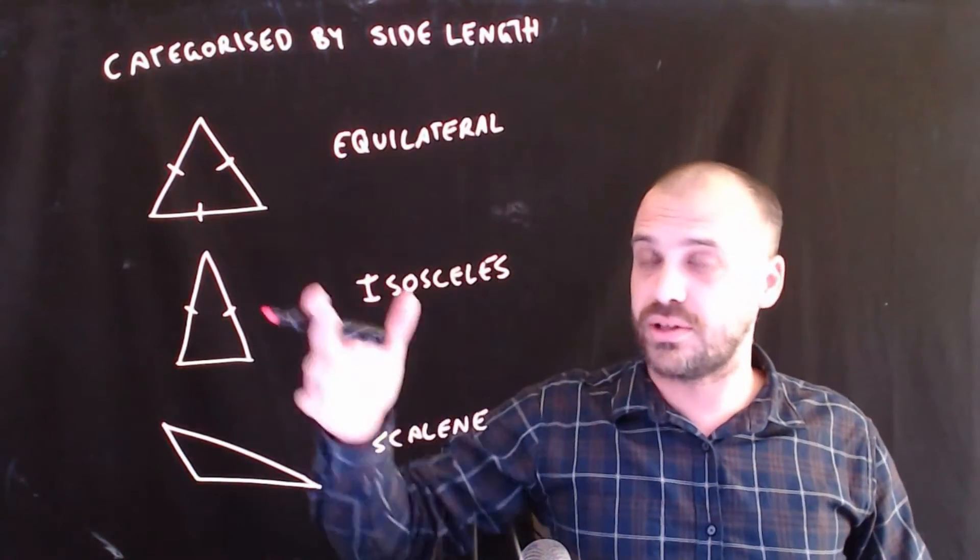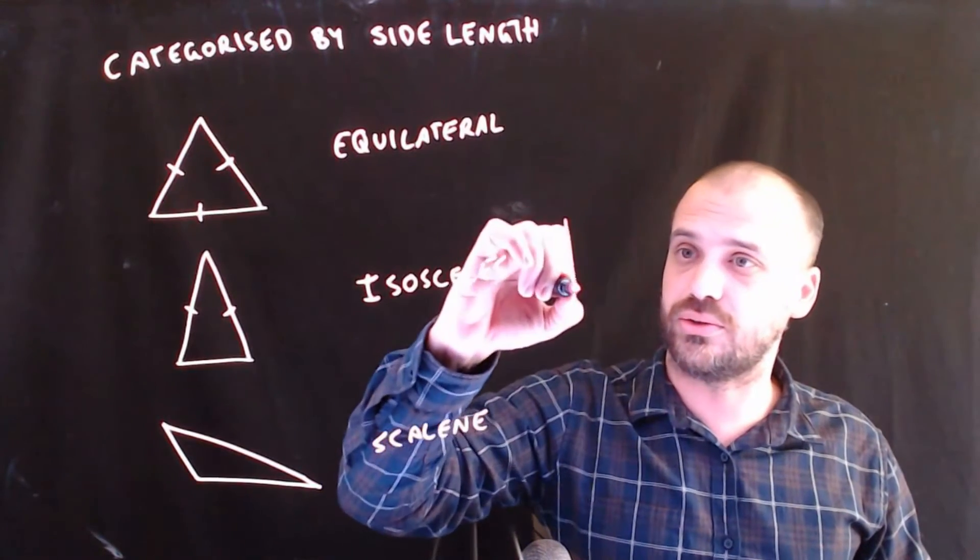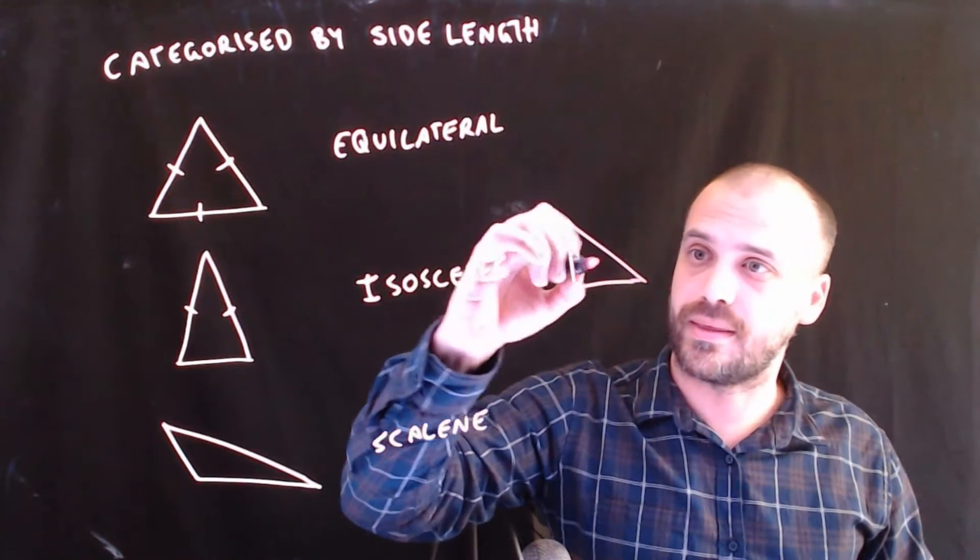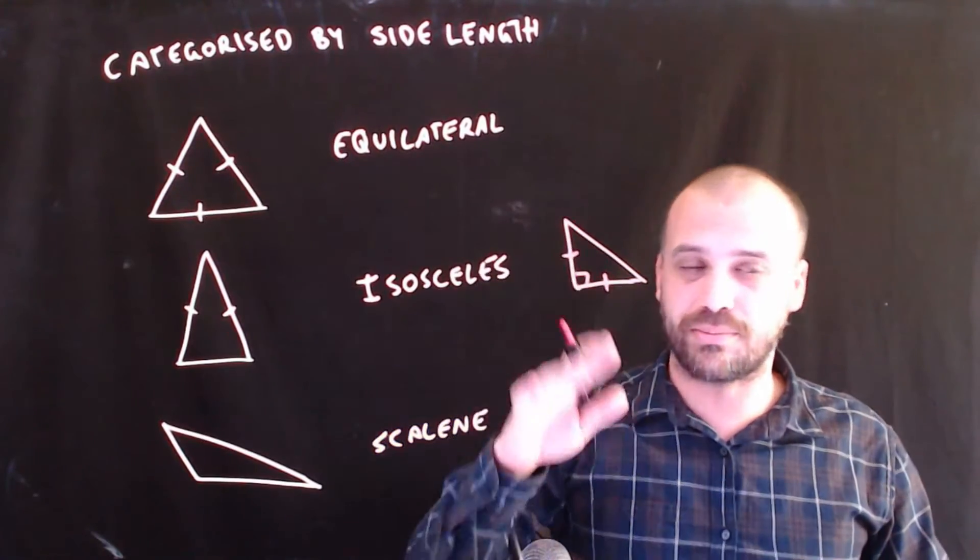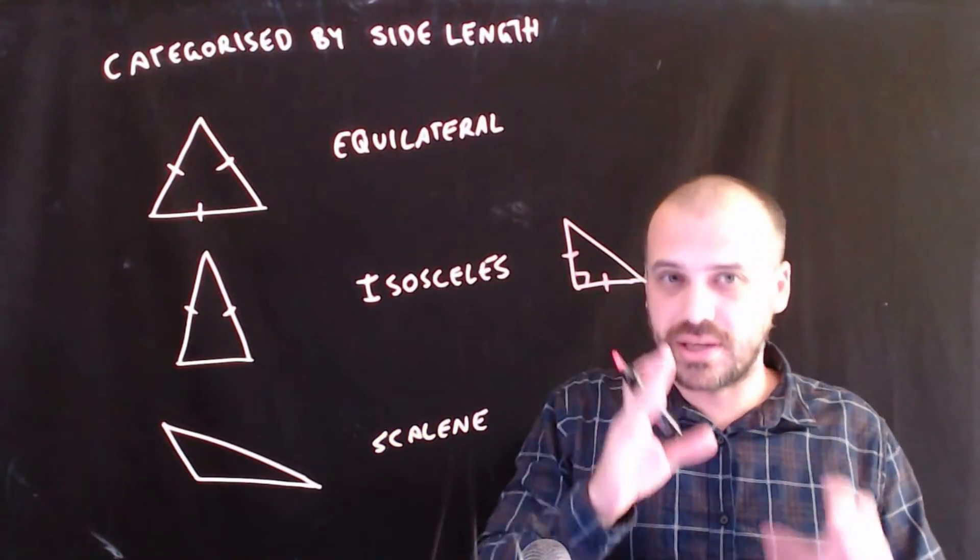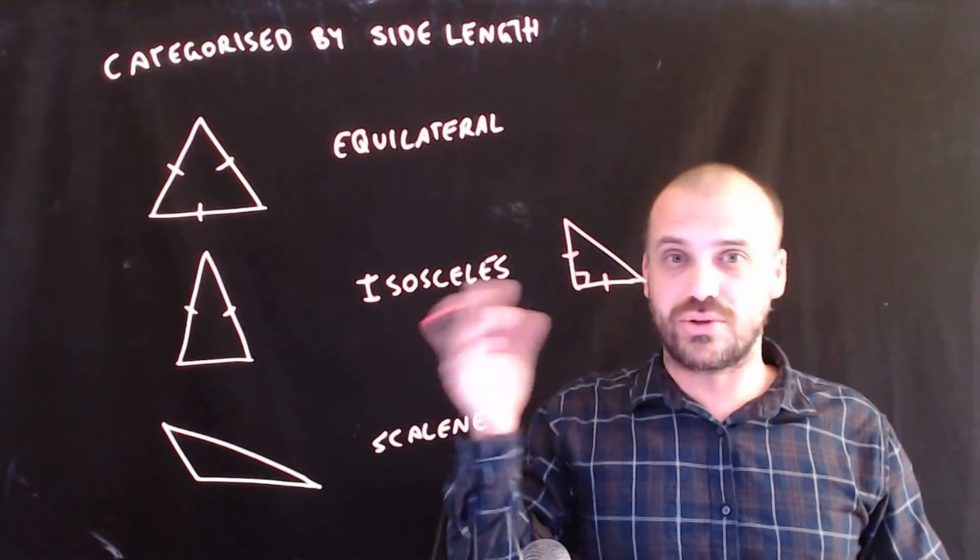Not necessarily the case for these ones. For instance, an isosceles triangle can also be a right angle, depending on how you draw it. But we can categorize triangles using these two different methods.